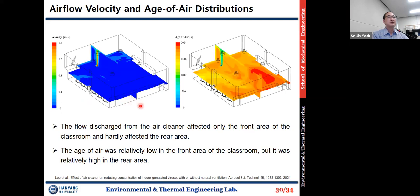The simulation results show velocity distribution on the left and age of air distribution on the right. The flow discharged from the air cleaner affected the front area of the classroom and hardly affected the rear area. The age of air is very low near the air cleaner, but in the rear area the age of air value is very high, because of large recirculation, meaning clean air can hardly reach the rear part of the classroom.